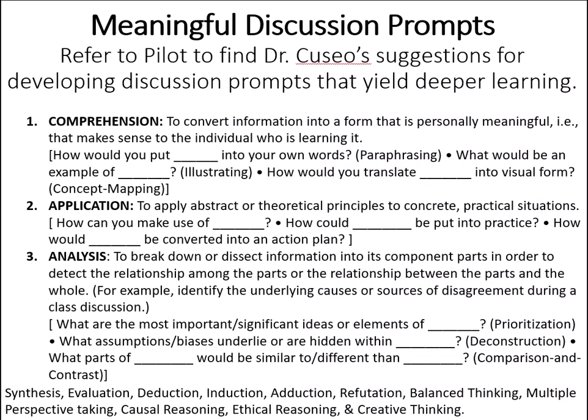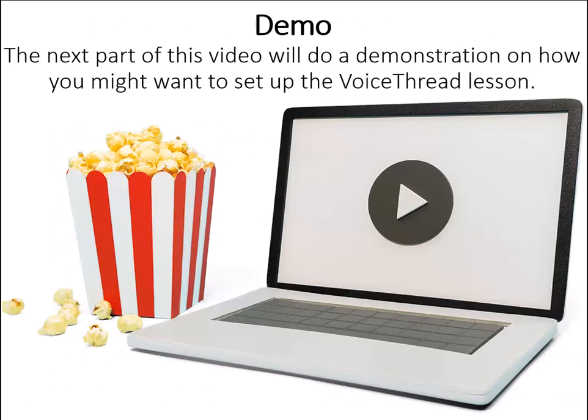Your VoiceThread lesson should include opportunities for students to have digital conversation at the end of each phase. Developing effective discussion questions can be challenging. Joe Caruso, a faculty member from Marymount College, has developed examples of questions organized at various taxonomy levels that can be used to create discussion questions to promote critical thinking. Refer to your pilot assignment information to see examples of how to develop discussion prompts to encourage students to think critically and at deeper levels. The next part of this video will demonstrate how you might want to set up your VoiceThread lesson.